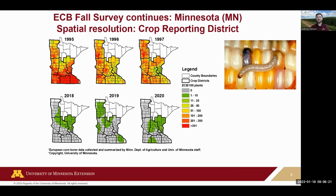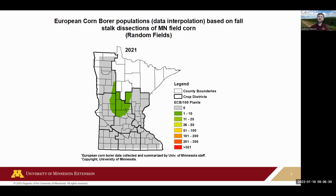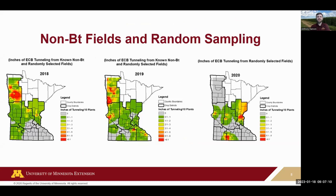Continuing these surveys, we have maps showing European corn borer larvae per 100 plants. Around the mid-90s you'd see high numbers across the state — especially southern Minnesota — close to 300 larvae per 100 plants. In more recent years we had pretty low numbers; sometimes it was hard to find any borers across the state, just one or two per field. The 2022 data shows one site in central Minnesota that was heavily infested, but overall populations were very low.